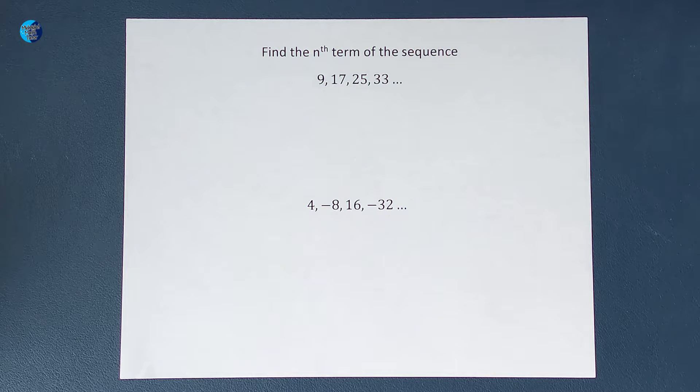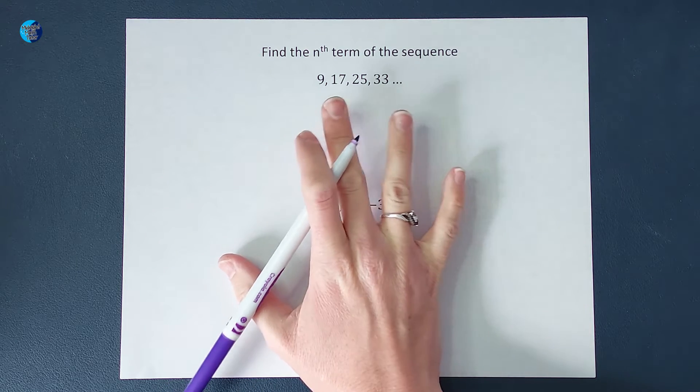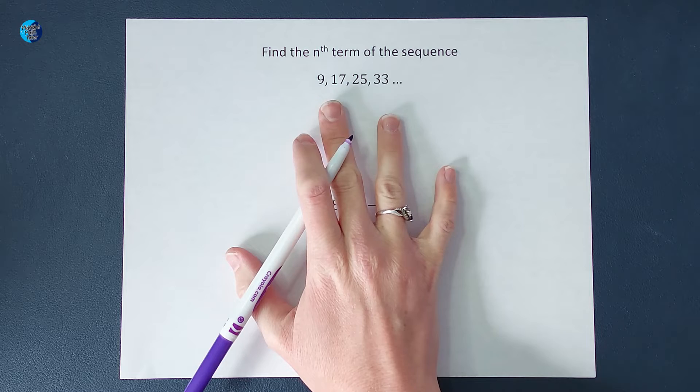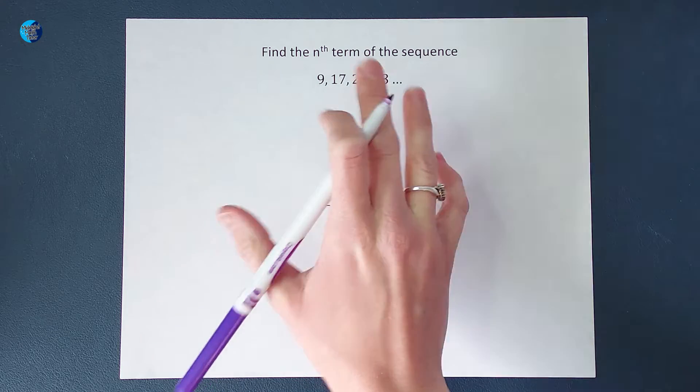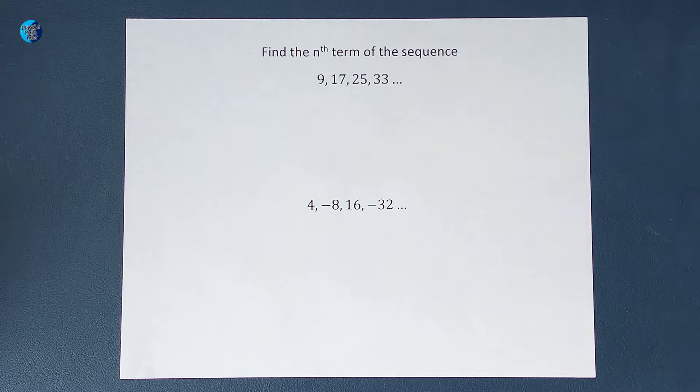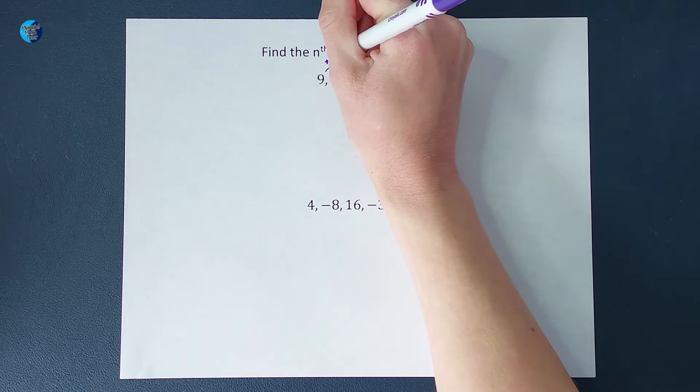So the first thing I do to find these is I'm going to look at my top sequence here and figure out what is happening to these numbers. What did I do to 9 to get 17? What did I do to 17 to get 25 and so on? So I figure out when I look at it that we are adding 8 each time.